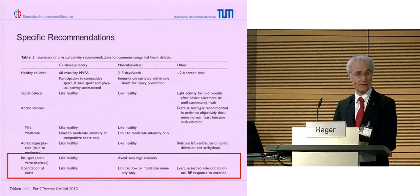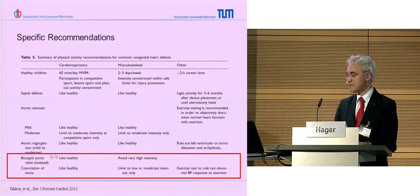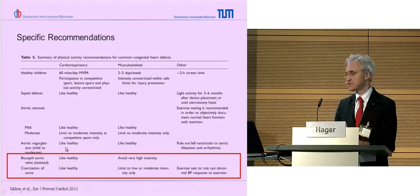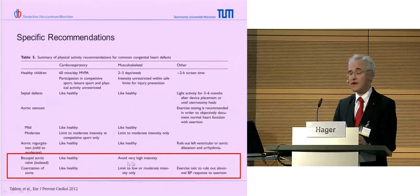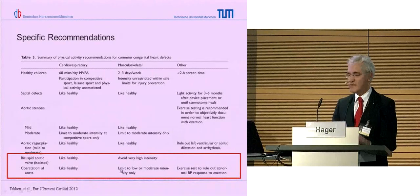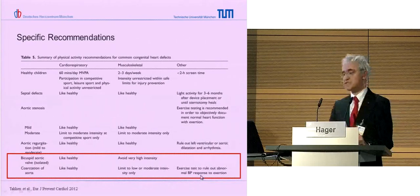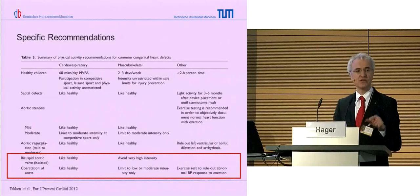The specific recommendation for this group is that with isolated bicuspid aortic valve, dynamic exercise can be done without any restrictions and strength training should avoid very high intensities. For coarctation, we go a little further: dynamic exercise no restriction, and for strength training they should be limited to low and moderate intensity. You should perform an exercise test to rule out an abnormal blood pressure response, because then you really have to give the patient a few more specific advices.